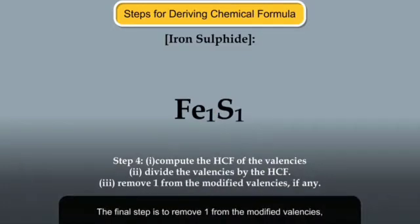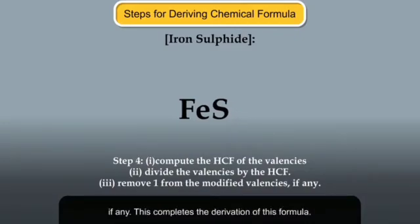The final step is to remove 1 from the modified valencies if any. This completes the derivation of this formula. This is a general method of deriving the chemical formula of compounds. Let us take one more example.